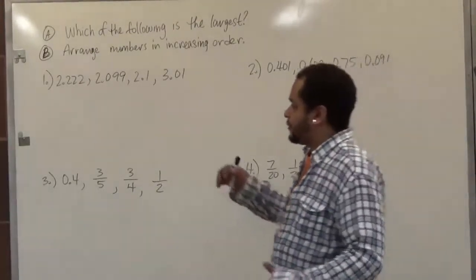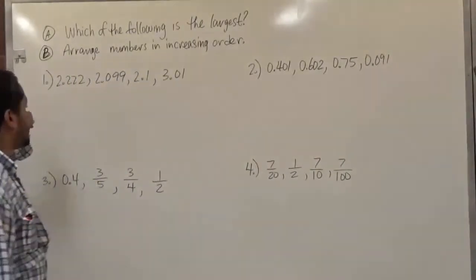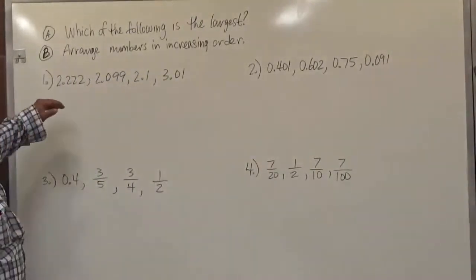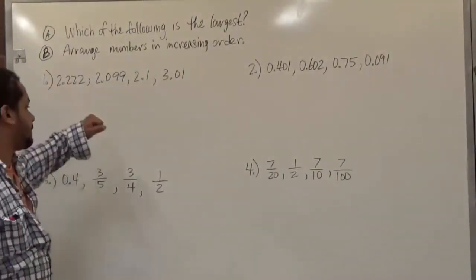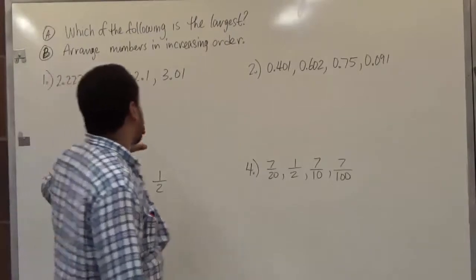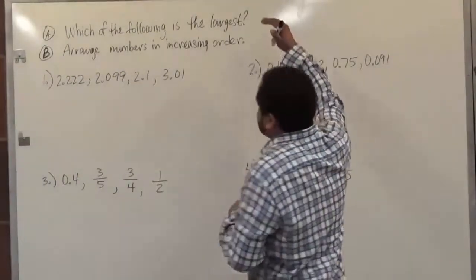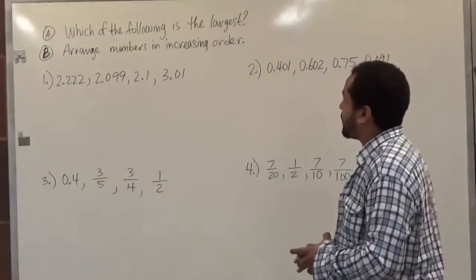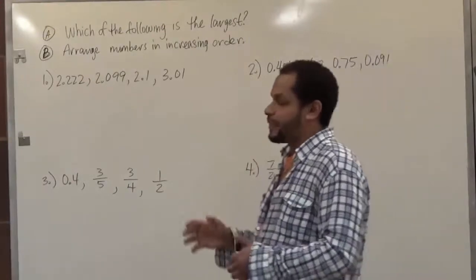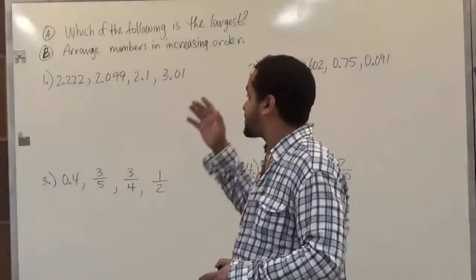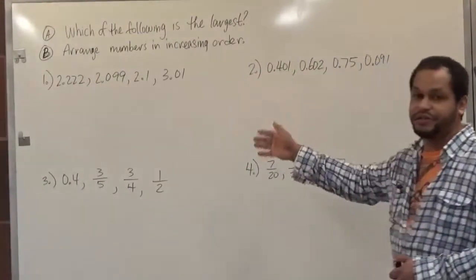They're all going to work in different ways. For the most part, these are decimal numbers that are greater than one. So the first task is going to be to find which of the following is the largest number, and the second task is going to be to arrange the numbers in increasing order.